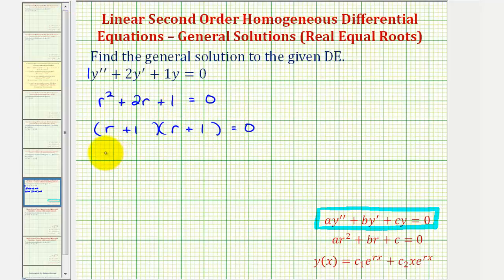Notice we have r equals negative one here, or r equals negative one here. So if we call this r sub one, and this r sub two. Again, notice we have two real equal roots. And therefore, the solution to the differential equation will be in this form.